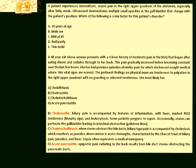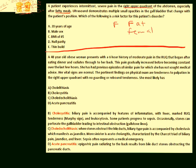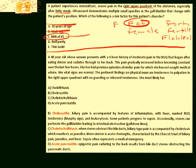Here's a clinical vignette: A patient experiences intermittent severe pain in the right upper quadrant, especially after fatty meals. Ultrasound demonstrates multiple small opacities in the gallbladder that change with the patient's position. Which of the following is a risk factor for this disorder? Remember the Five F's: fat, female, 40, fertile, and flatulent. Age 20 is less than 40, male sex isn't female, BMI 45 is overweight — so the answer is C. Nulliparity (never pregnant) is opposite of fertile, and a thin build is opposite of overweight.